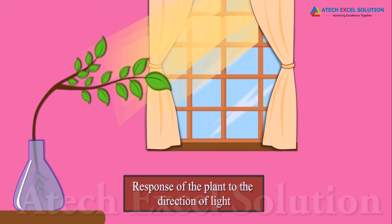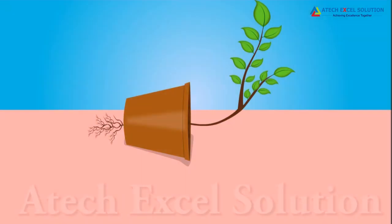In case of environmental trigger like gravity, the roots show positive geotropism and shoots show negative geotropism.